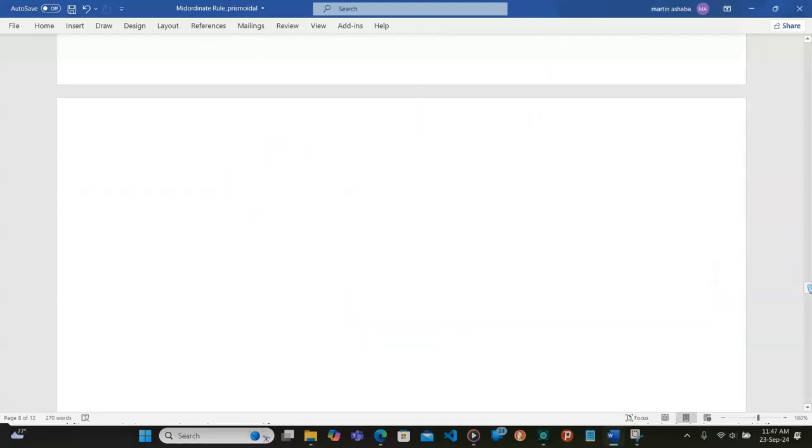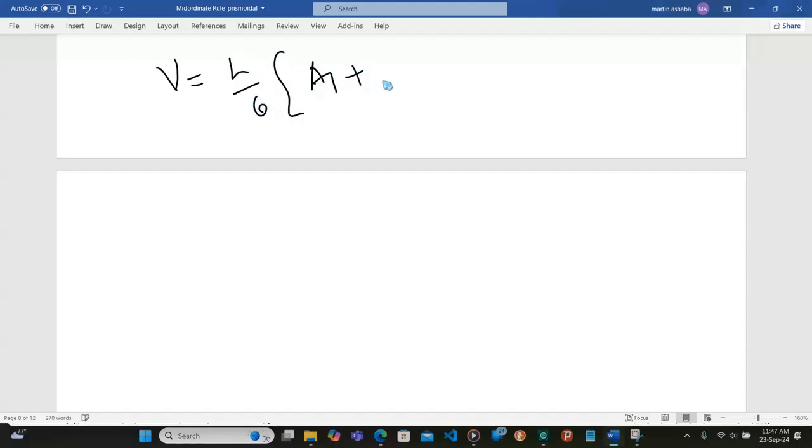We know for regular shapes, we can use the volume equivalent to L out of 6 into area A1 plus area A2 plus 4AM. So here, we're going to be looking at A1 and A2, those are the end areas. Then we look at the one in the center of this trap. Now to begin, let's look for area A1.